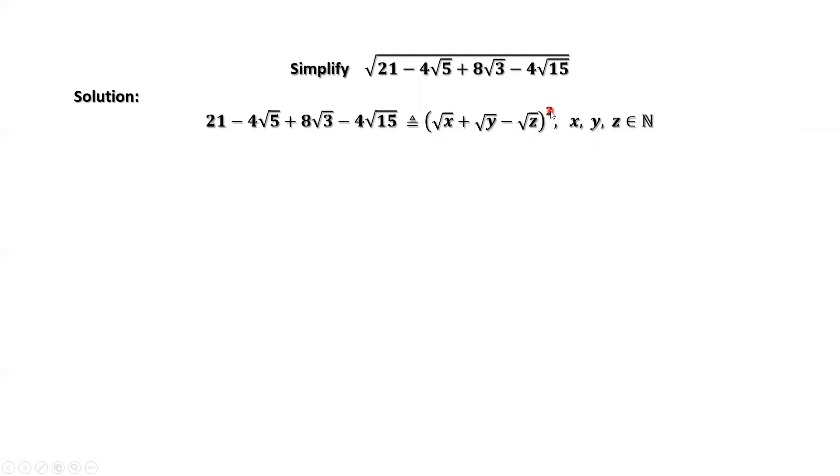If here we have a square, the outside square root sign will be canceled with this square. Here, x, y, and z are positive integers.